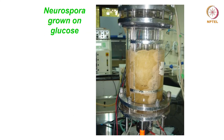If you see the picture here, it is a filamentous fungi — Neurospora — grown on glucose. You can see how much wall growth there is; it adheres to the stainless steel parts of the reactor. You can see the film adhered to the baffles; nothing else is visible.